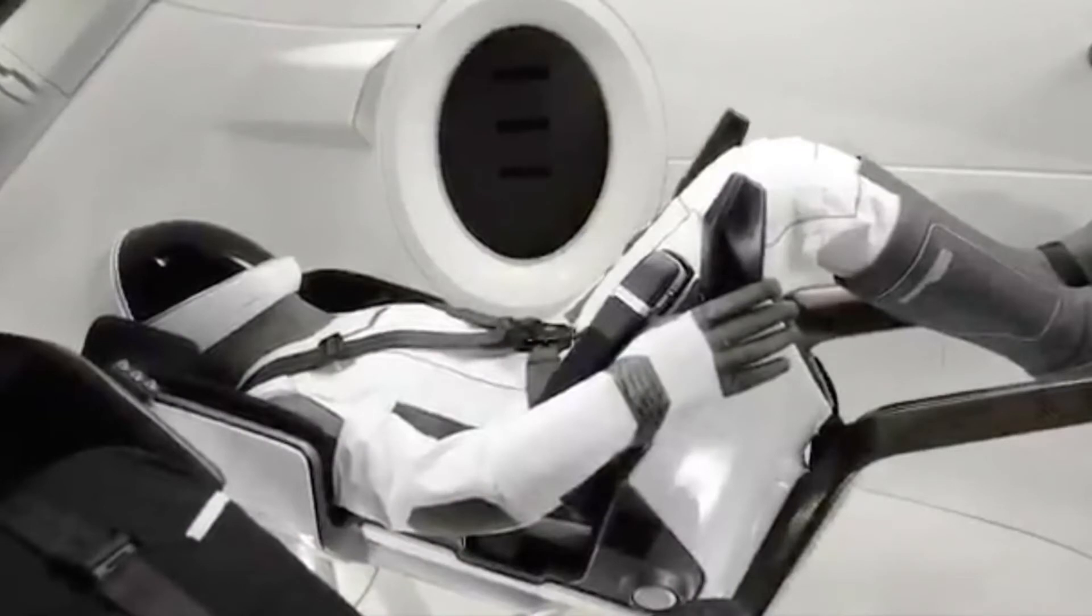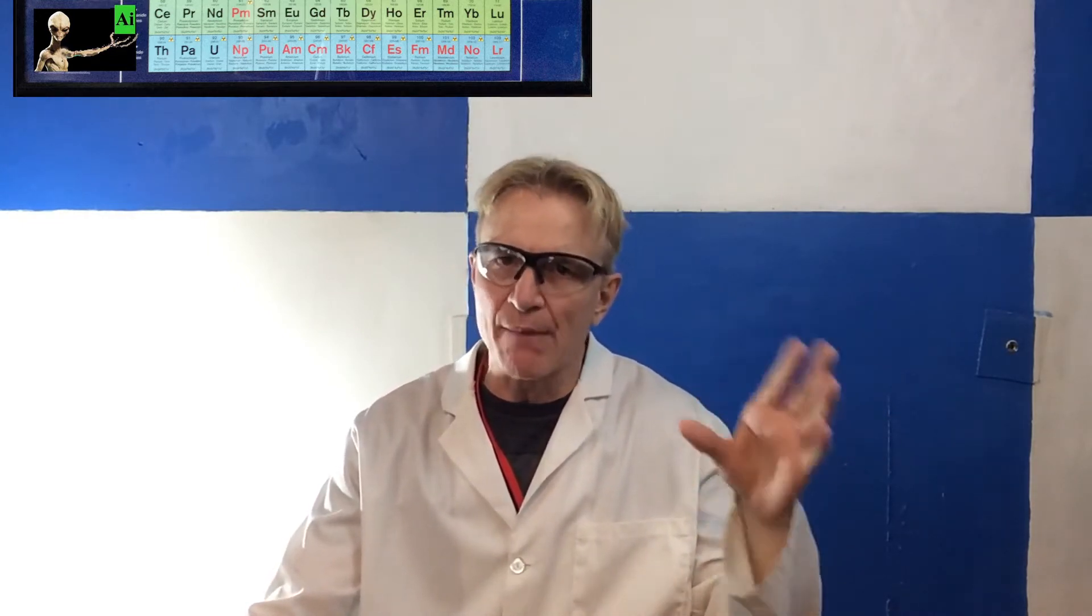Since we mentioned Starman, I better not fail to talk about Ripley. For those of you who do not know who Ripley is, she is the anthropomorphic test device or ATD. She looks like an astronaut strapped into one of the seats of Dragon, which will ultimately carry seven astros. She is full of sensors that will indicate what live astronauts will feel when they go into space. I believe her maiden voyage was on the Demo-1 mission.